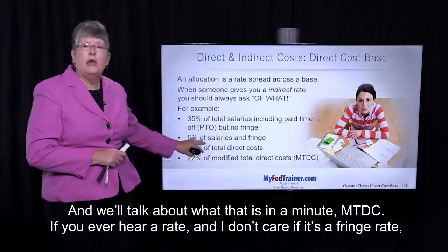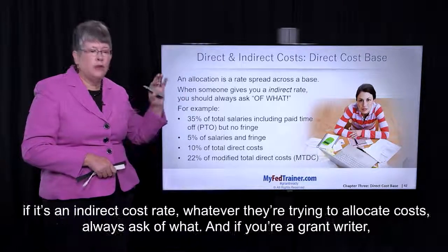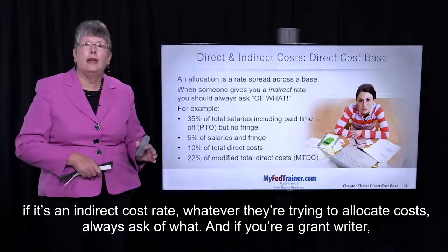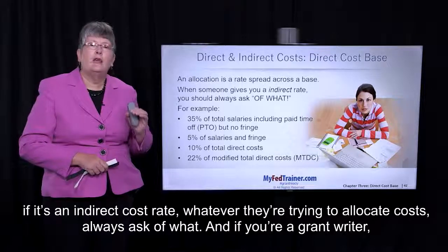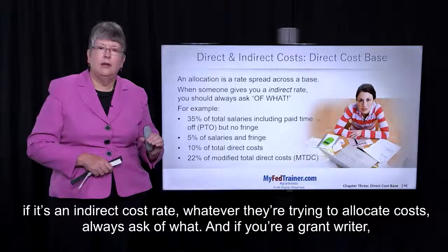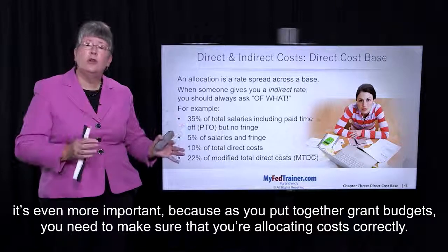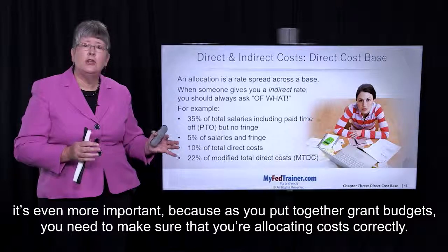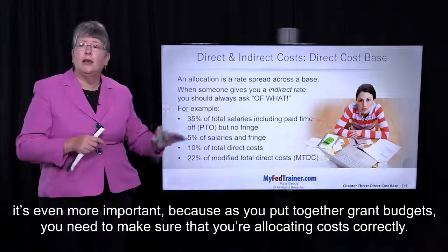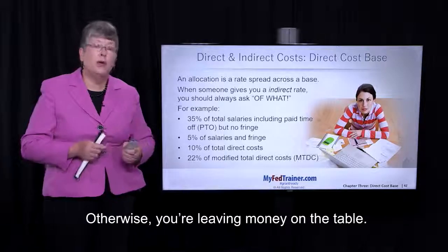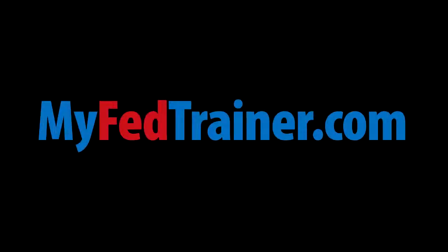If you ever hear a rate — and I don't care if it's a fringe rate, if it's an indirect cost rate, whatever they're trying to allocate costs — always ask, of what? And if you're a grant writer, it's even more important, because as you put together grant budgets, you need to make sure that you're allocating costs correctly. Otherwise, you're leaving money on the table.